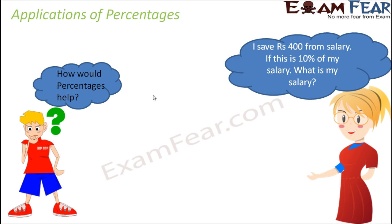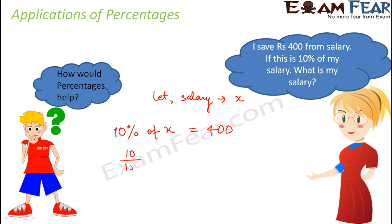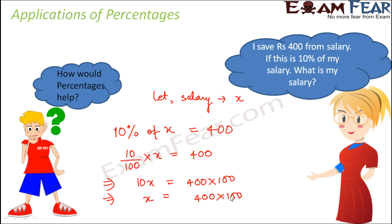Let's assume the salary is x, since we do not know how much it is. As per the question, 10% of the salary is being saved every month, so 10% of x equals 400. That gives us 10/100 × x = 400, which simplifies to 10x = 400 × 100. So x = 400 × 100 ÷ 10, which equals 4000. The teacher's salary is rupees 4000.